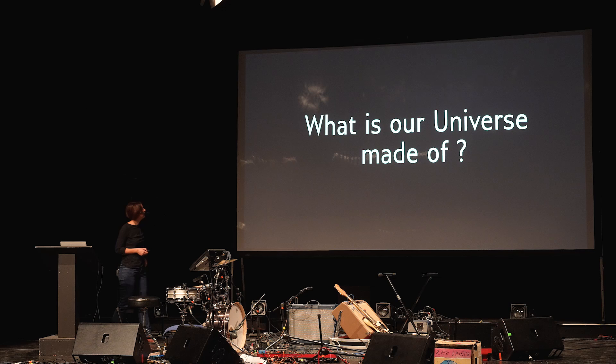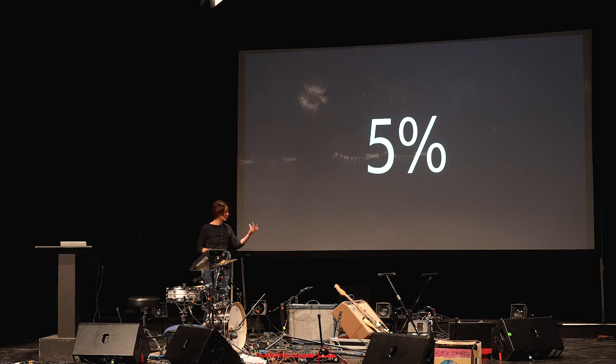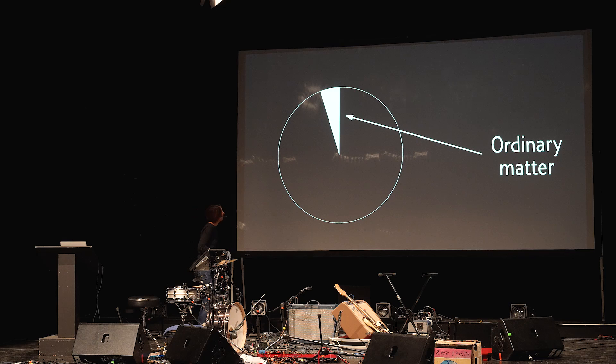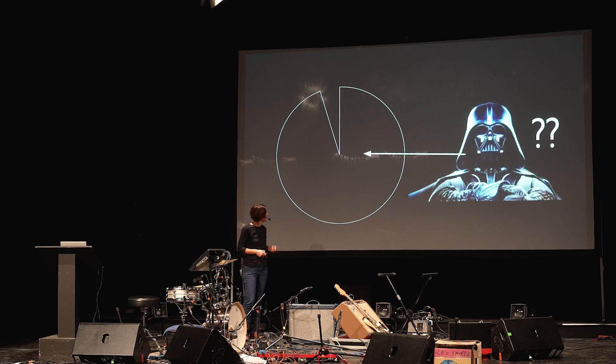As you have heard, essentially we would like to know, in general, what is our universe made of? Among the numbers we are going to discuss today, there is 5%. 5% is not much, right? If you go to a sale and you know that a shirt has 5% reduction, it's a bit small. 5% is actually the amount of ordinary matter that we have in the universe. Ordinary matter is us, is the matter we are made of, the matter that we see. All the rest, we actually don't know much about it. It's the dark side of the universe.